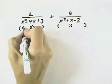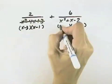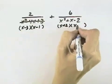In this one, we'll have x minus 3 times x minus 1 as the factors. This one will be x plus 2 times x minus 1.